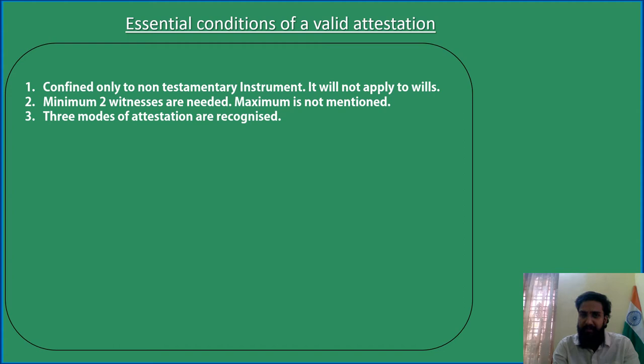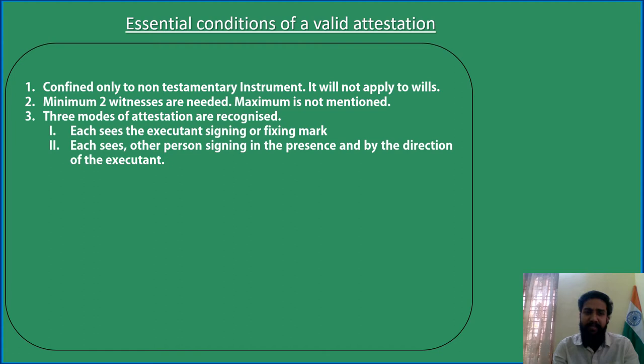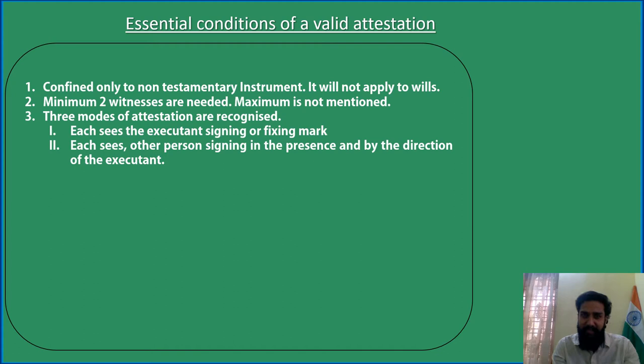The first mode is: each witness sees the executant signing or fixing their mark — meaning each witness sees that the owner of the property is actually signing the document in their presence. The second mode is: each sees the other person signing in the presence and by the direction of the executant. Here, the two witnesses are physically present at the same time, they can see each other signing the document, in the presence of the owner — the executant — who is also signing the property.